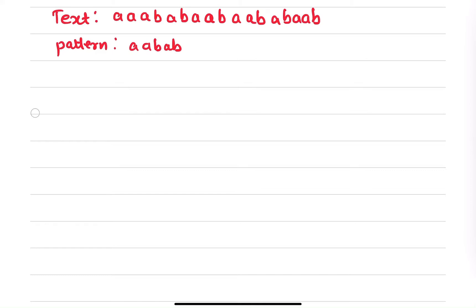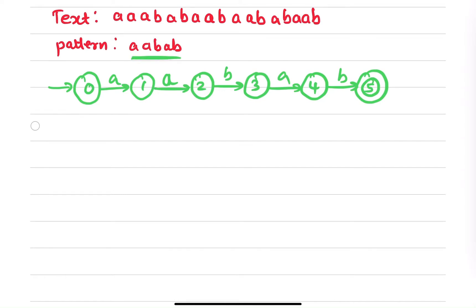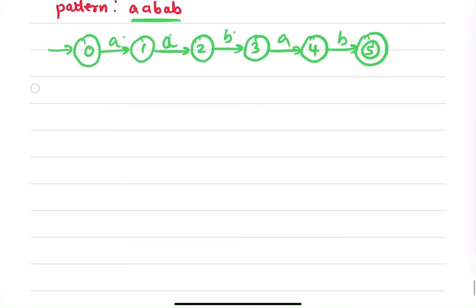The pattern is 'aabab', so let me create a rough automata. We have states zero, one, two, three, four, and five, with transitions on a, a, b, a, b respectively. You just need to create 'aabab' as input for the automata. Now we will create a transition table.